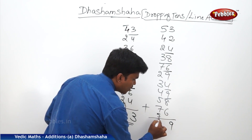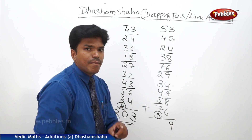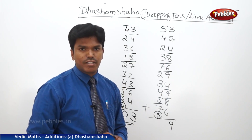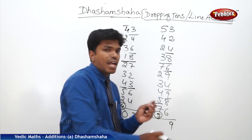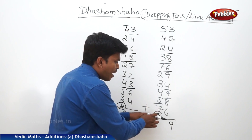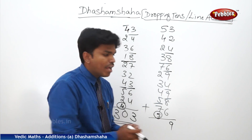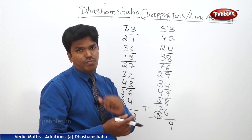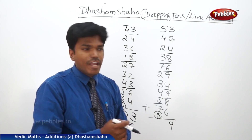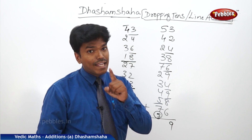Carry 5 to the next line. Now start from here. 5 plus 7? Instead of saying 12, I will say only the remaining after dropping a 10 — which is 2. This saves time. By dropping a 10, I say 2. Be careful: without dropping a 10, if you say 2, you will get it wrong.